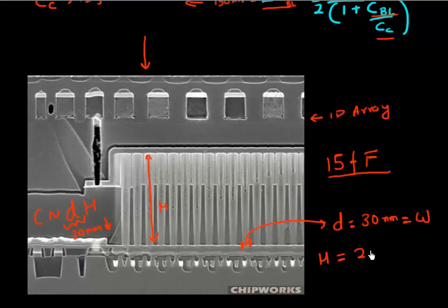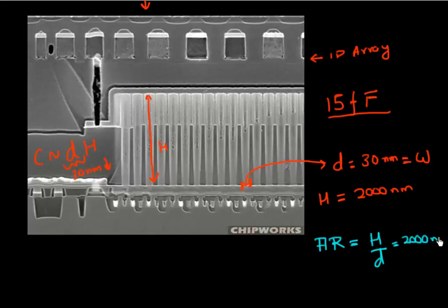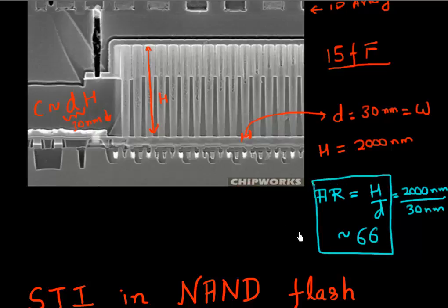To achieve this 15 femtofarad capacitance, the height required has become around 2000 nanometers. If you come back to our aspect ratio, which in this case is defined as height divided by diameter, it's 2000 nanometers or two microns divided by 30 nanometers, which gives you an aspect ratio of around 66. You can already see this stack capacitor has an aspect ratio of 66, which is higher than the Mariana Trench and much higher than Burj Khalifa.